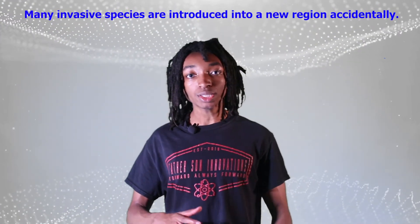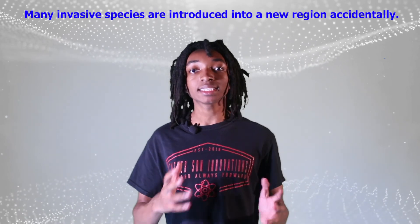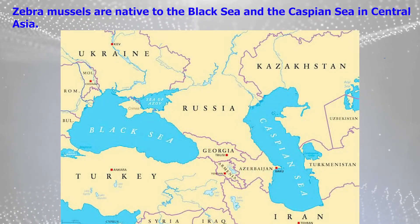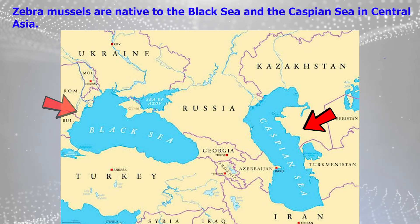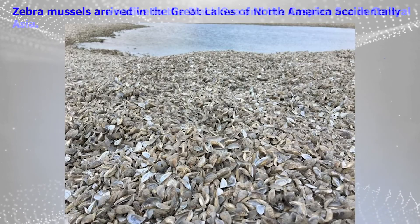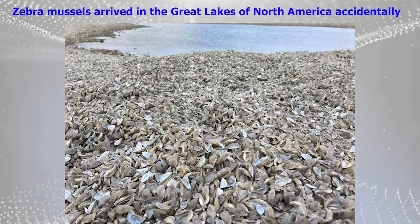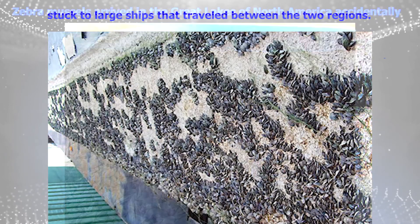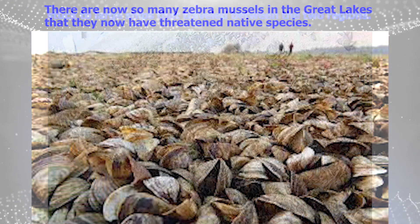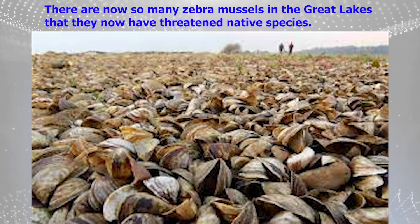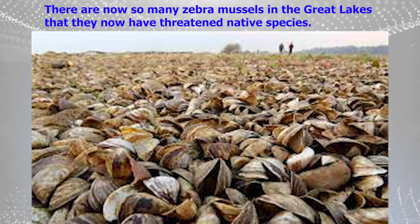Many invasive species are introduced into a new region accidentally. Zebra mussels are native to the Black Sea and the Caspian Sea in Central Asia. They arrived in the Great Lakes of North America accidentally, stuck to large ships that travel between the two regions. There are now so many zebra mussels in the Great Lakes that they have threatened native species.